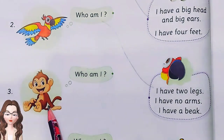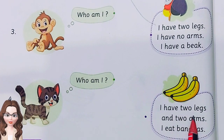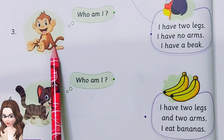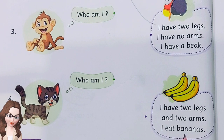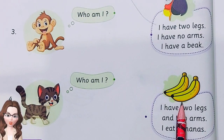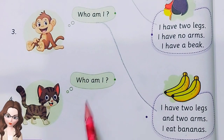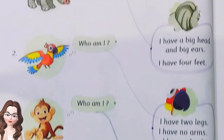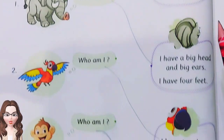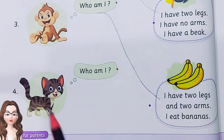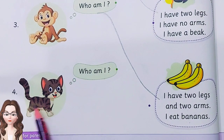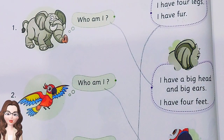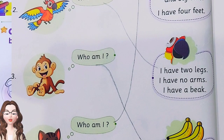Who am I? What is this? It's a monkey! I have two legs and two arms. I eat bananas. Okay, this activity is so funny and very easy!